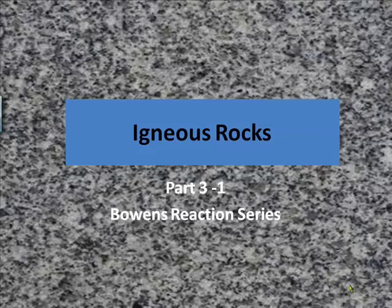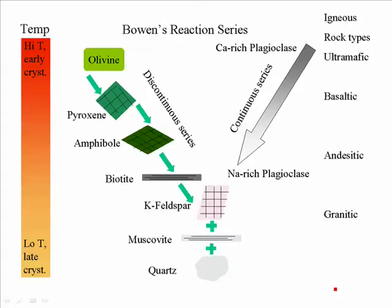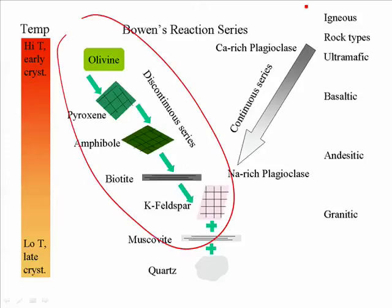Igneous Rocks Part 3-1, Bowen's Reaction Series. Bowen's Reaction Series can be described as the order of crystal formation from magma as cooling occurs. You can see that it actually has two parts to it. There is the discontinuous series on the left and the continuous series on the right.